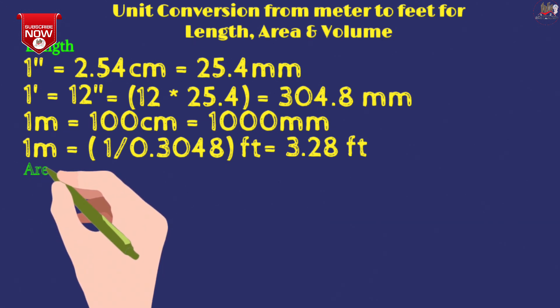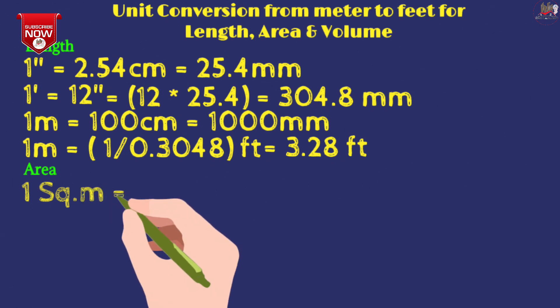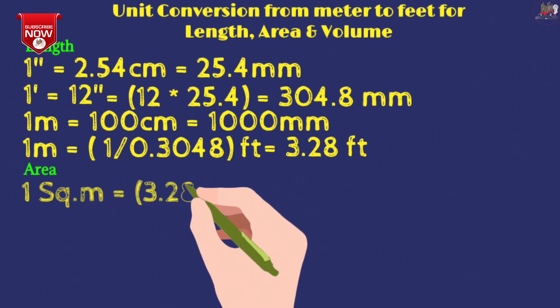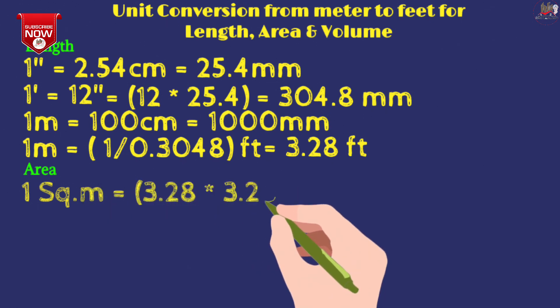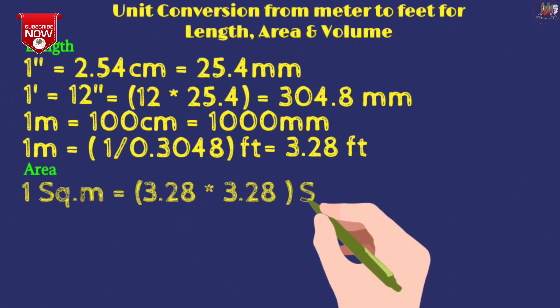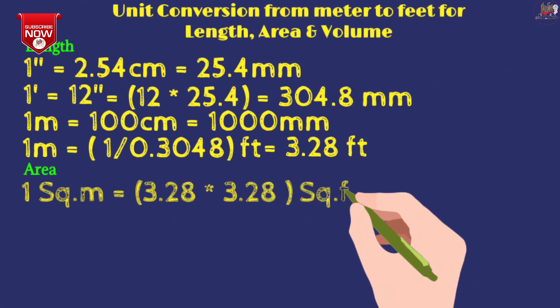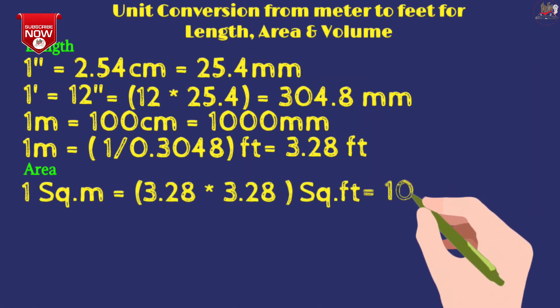Now we will talk about area. 1 square meter means length and width. So 3.28 times 3.28, this comes to 10.76 square feet.